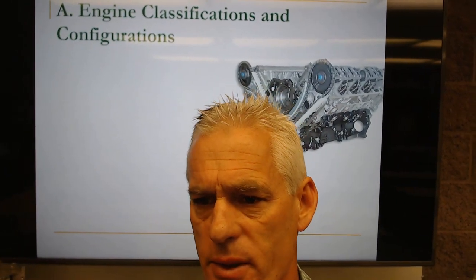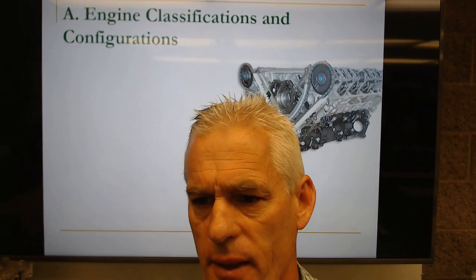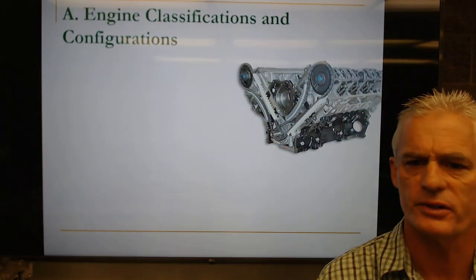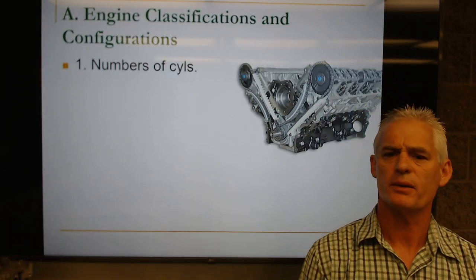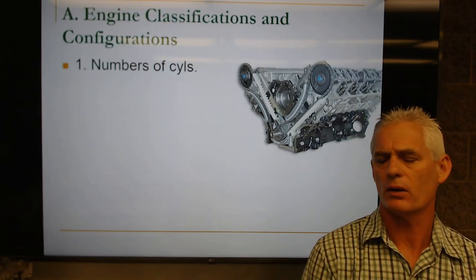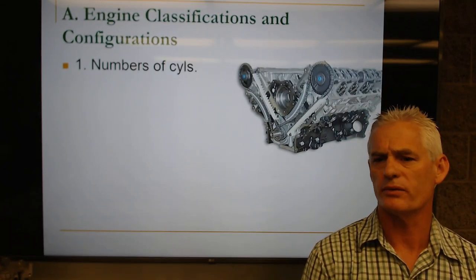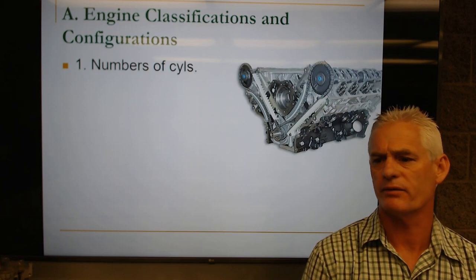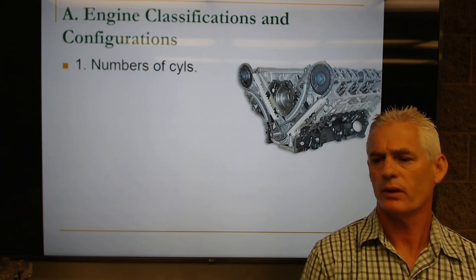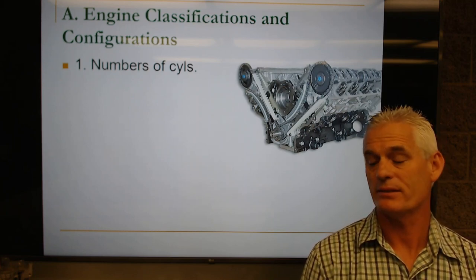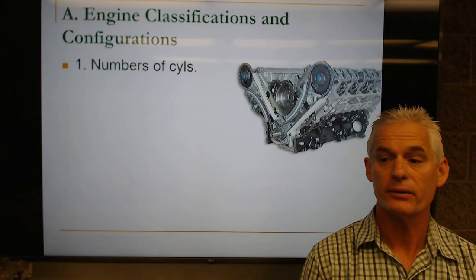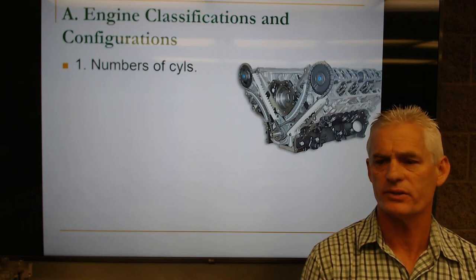First, number of cylinders. We can have three, four, five, six, eight, ten, or twelve cylinders. And then cylinder position or orientation — in other words, is it a V-type engine, is it inline, or is it a horizontally opposed pancake engine like a Subaru, a Porsche, or old-school Volkswagen from 1939 to approximately 1986?